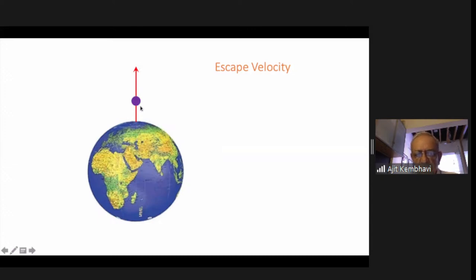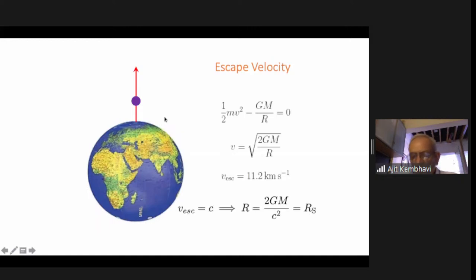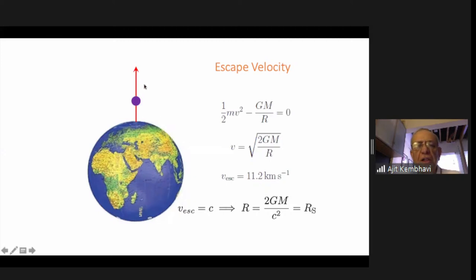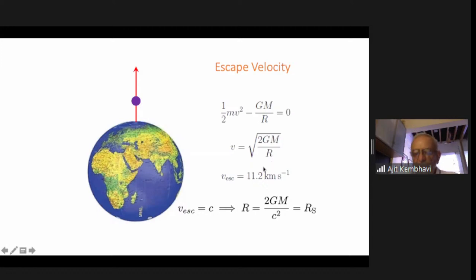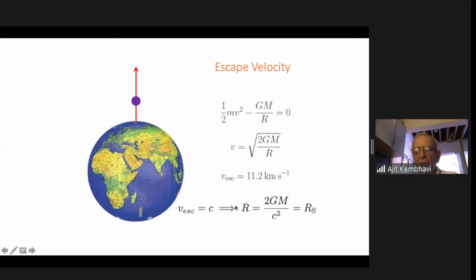For the Earth, the escape velocity turns out to be about 11.2 kilometers per second. Now you can imagine increasing the mass or decreasing the radius, so V keeps increasing. For the right combination where R equals G M by c squared, the escape velocity equals c. So if you had an object with appropriate mass and radius, light could not escape from it — the black hole would appear dark. This concept of a black hole within Newton's theory came from John Michell in 1784 and by Laplace in 1795, who said essentially that a body with the right properties would not allow light to escape.